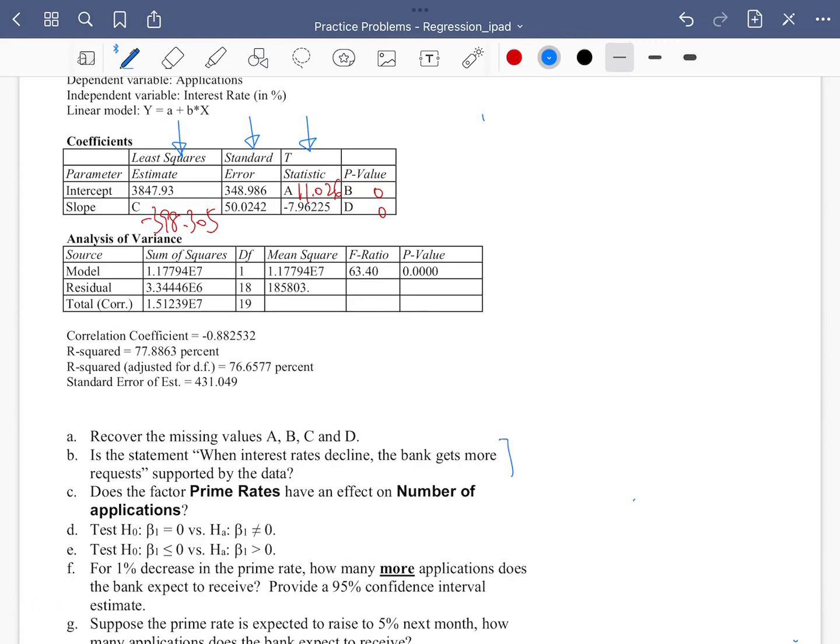So this question actually says when interest rate, which is X, when it drops, Y, the number of applications, will increase. This kind of relationship can be measured by the slope. When does it happen when X drops, Y increases? That means when slope is negative. So question B is actually asking the same question as whether beta slope, beta 1, is less than 0.